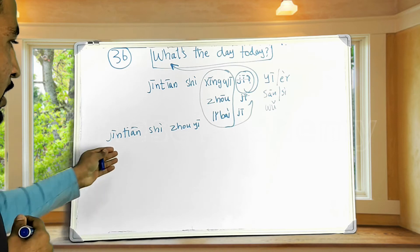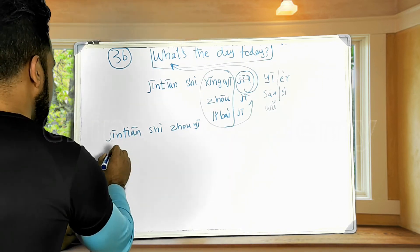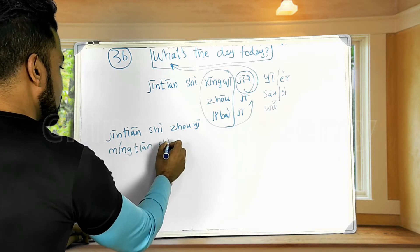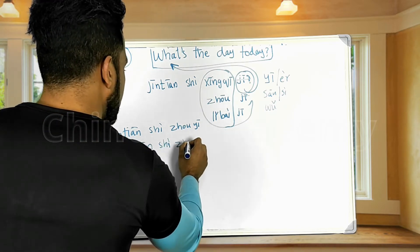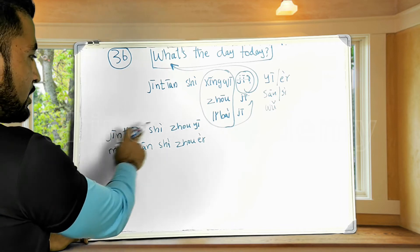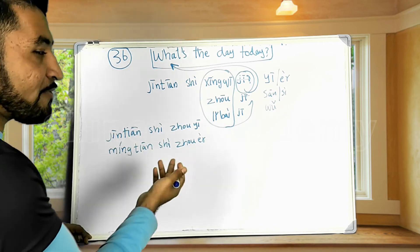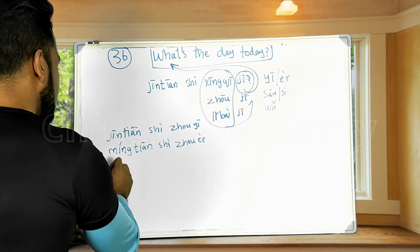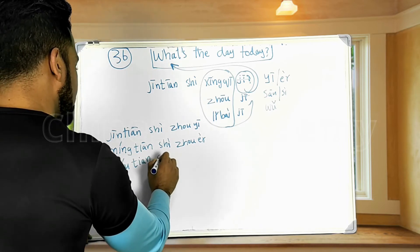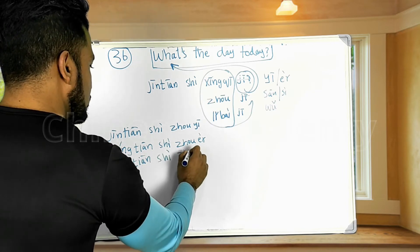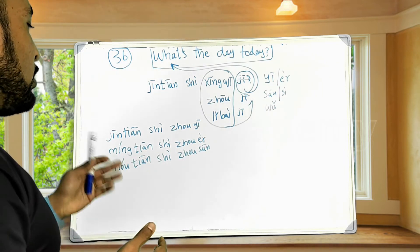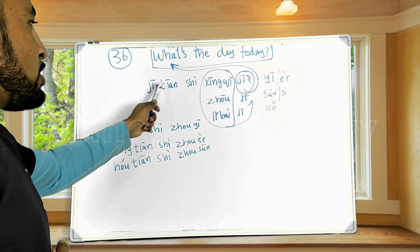So tomorrow — if today is Monday, tomorrow is Tuesday, so you can answer 明天是星期二 (Míngtiān shì xīngqī èr). For day after tomorrow — if today is Monday, tomorrow is Tuesday, then day after tomorrow is Wednesday, so you can answer 后天是星期三 (Hòutiān shì xīngqī sān).